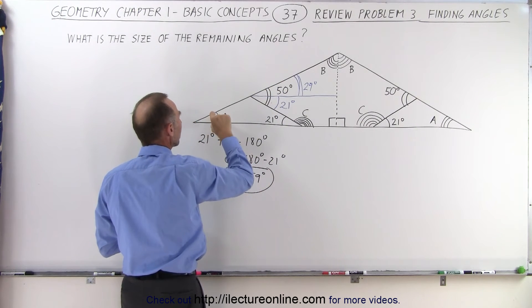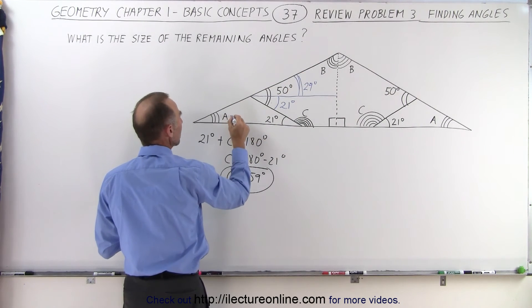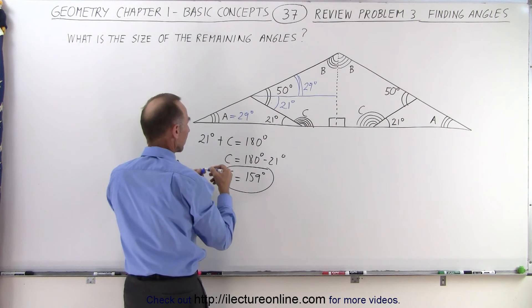So angle A is equal to this angle, that's 29 degrees, which means that A must be 29 degrees as well.